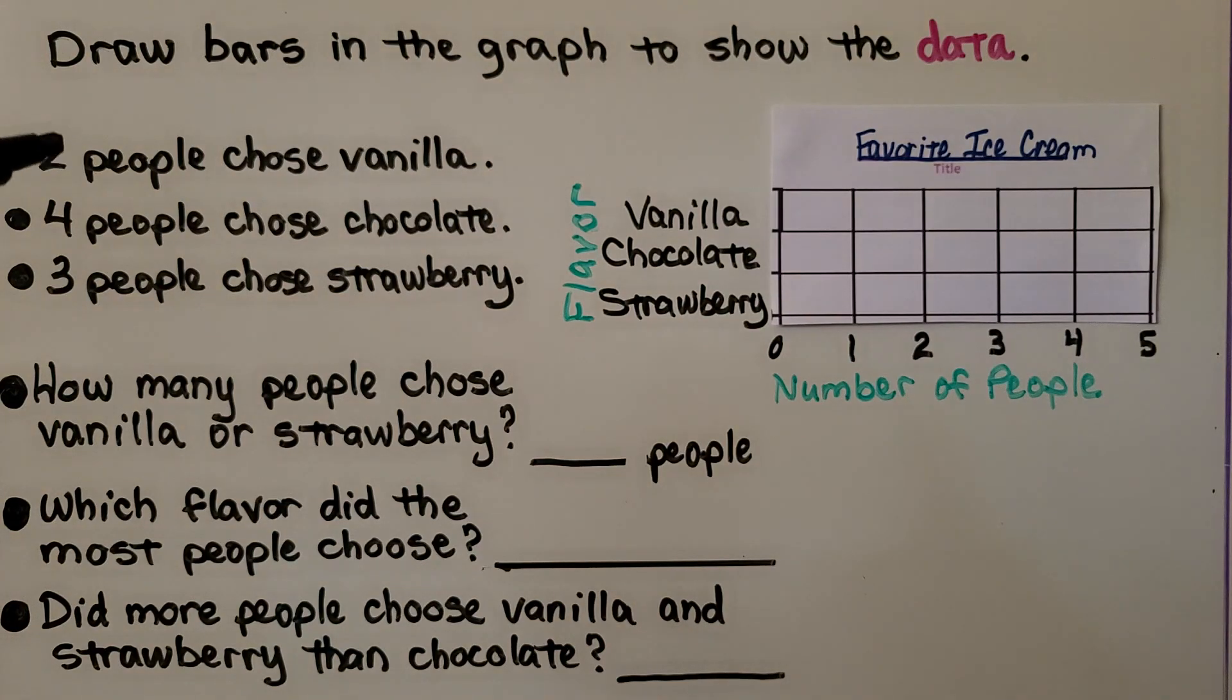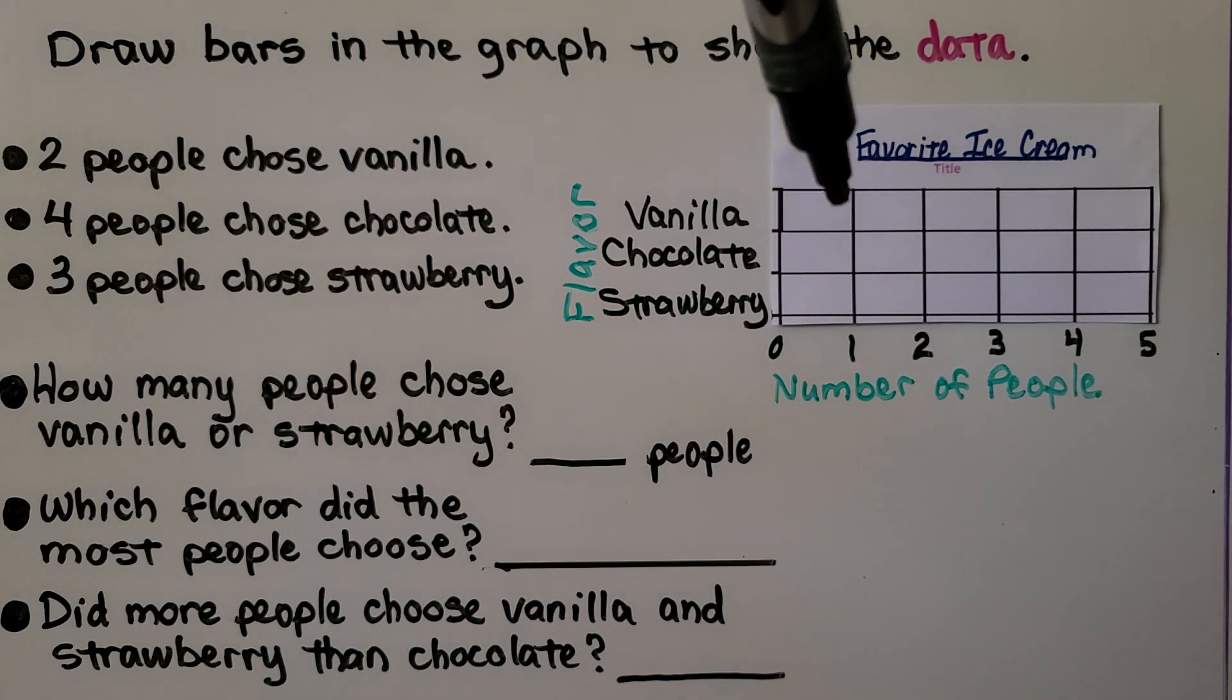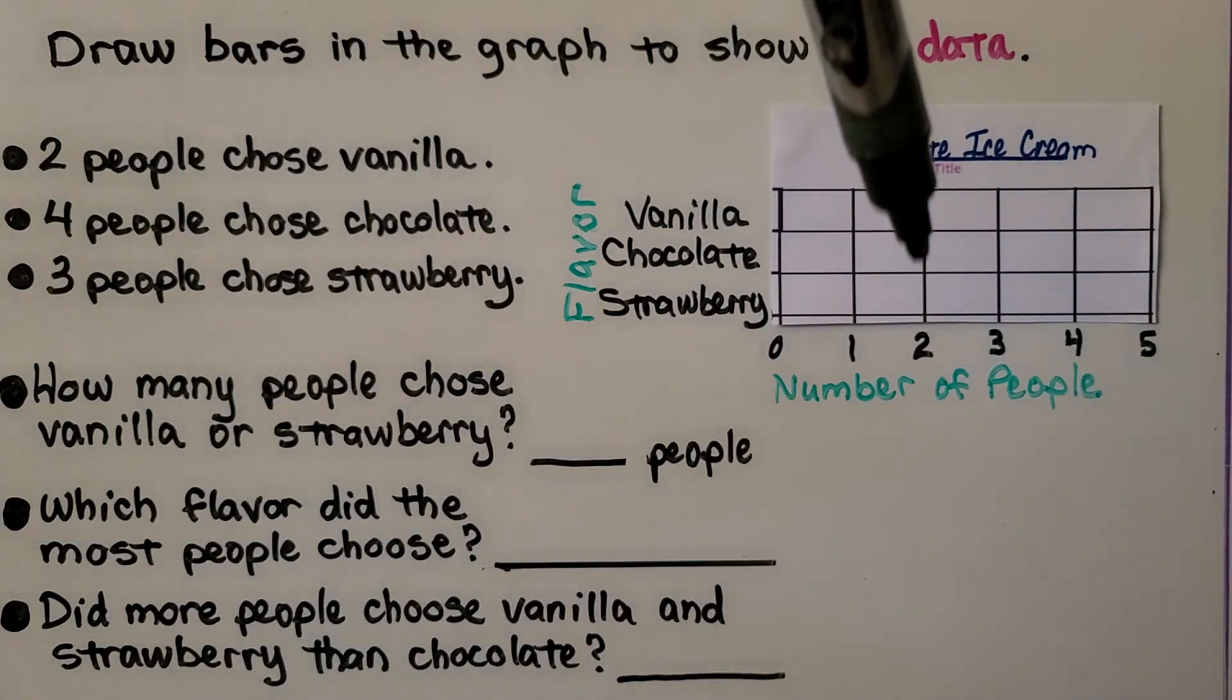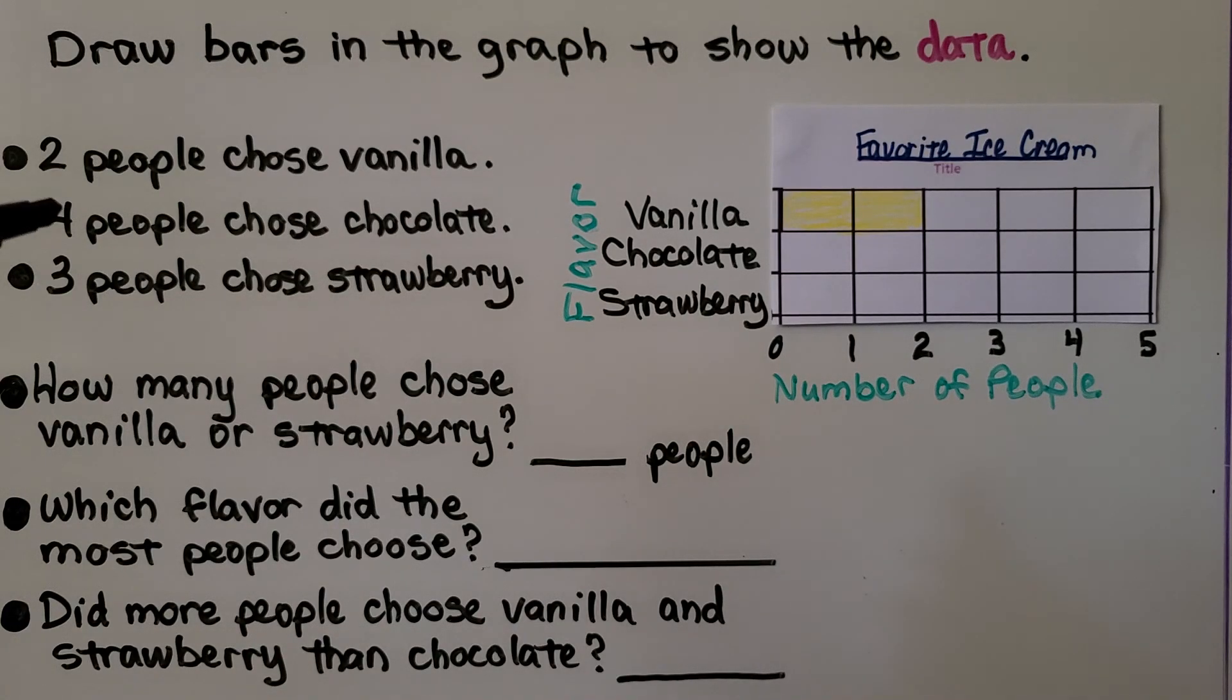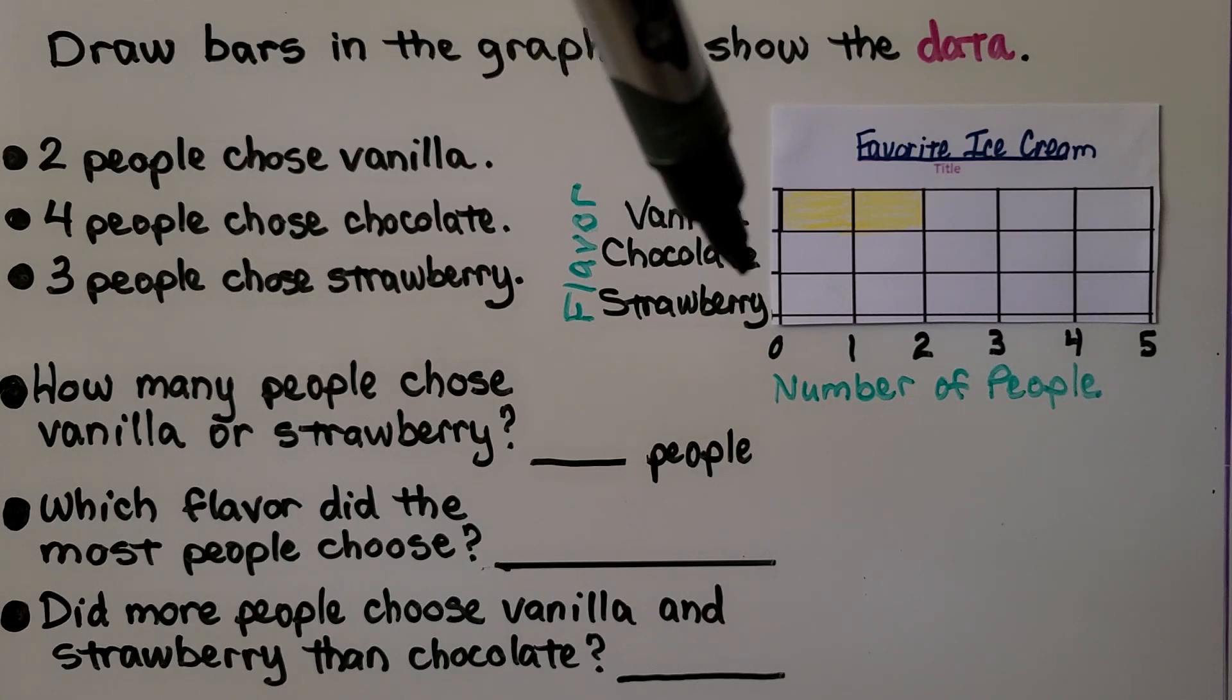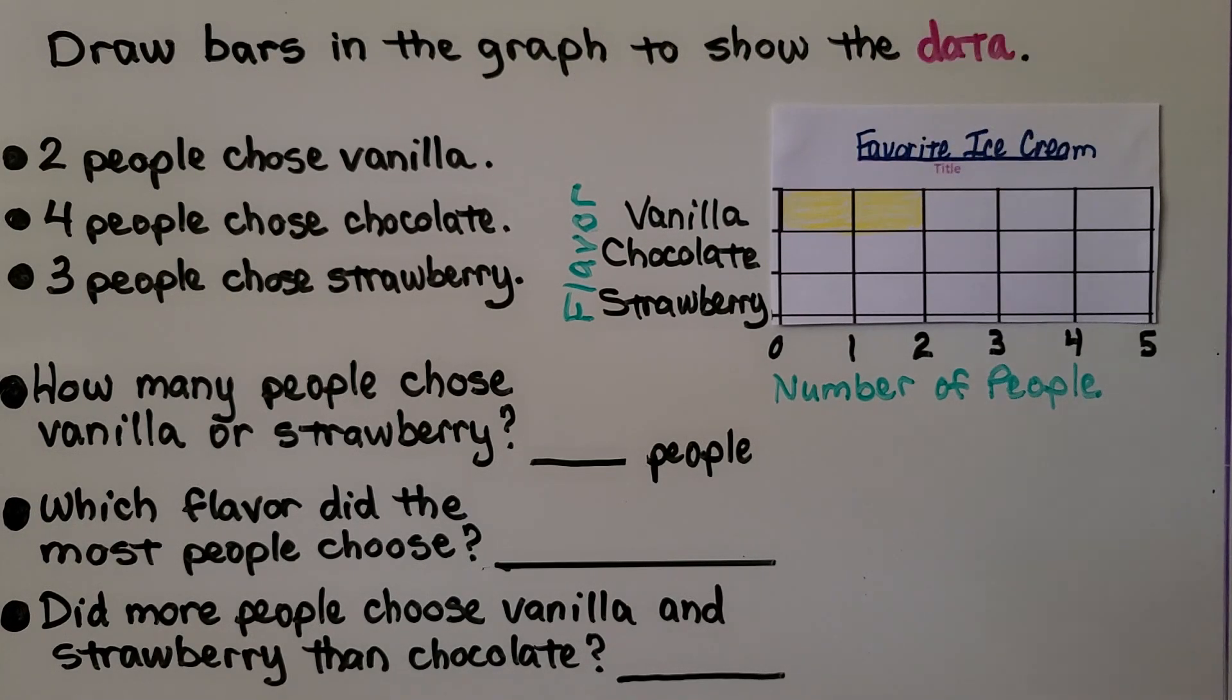If two people chose vanilla, we would go to the vanilla row and color it in up to the number two on the scale. It's telling us four people chose chocolate. We're going to go to the chocolate row and fill in and color up to the number four on the scale.